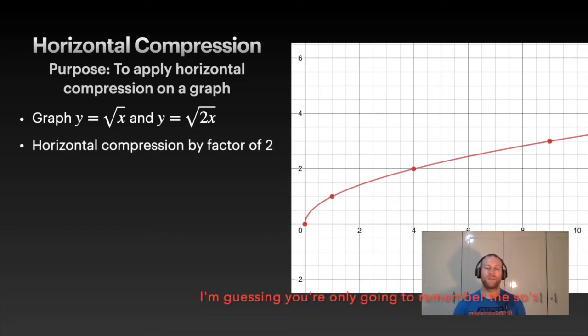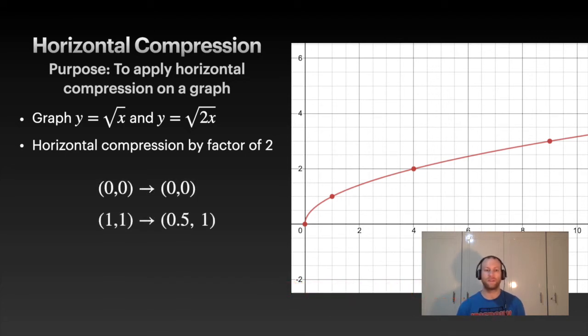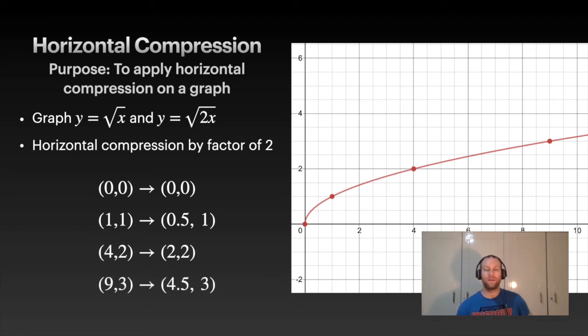By having 2 inside the square root, this is a horizontal compression by a factor of 2. We're going to take all the points that are on our original graph, and we're going to take the x value and divide it by 2. Take each of the x values for each of these points, divide it by 2. Again, notice 0, 0, take a 0, divide it by 2, still a 0. So that point doesn't matter. Then, we're going to plot these points and graph it.